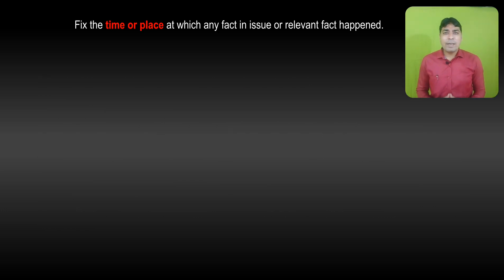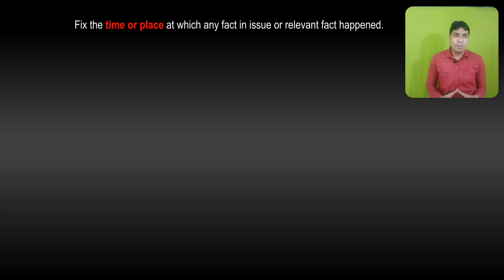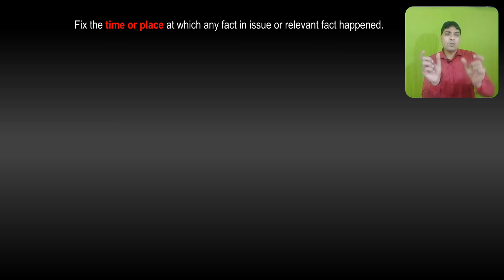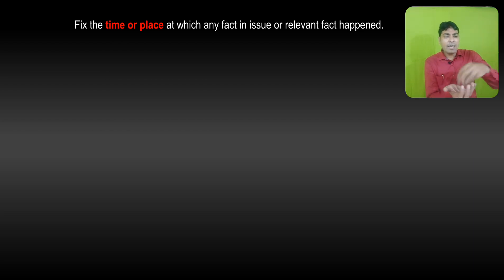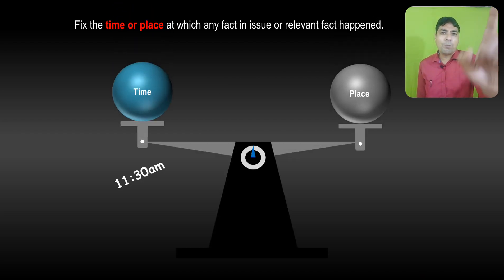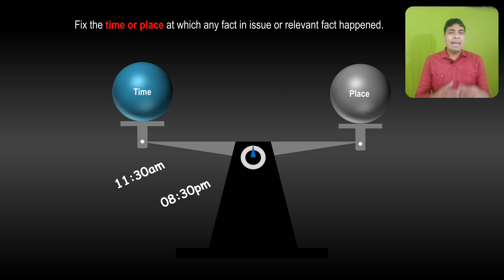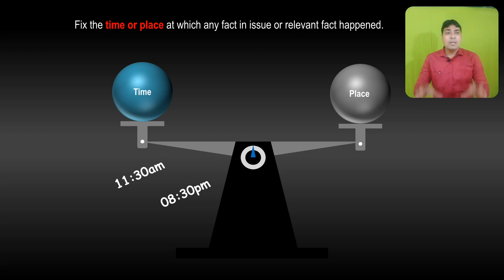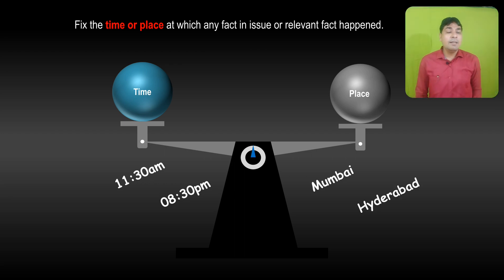Section 9 also covers facts that fix the time or place at which any fact in issue or relevant fact happened. A fact stating when or where an offense occurred — for example, at 11:30 a.m. or 8:30 a.m. — becomes relevant as it fixes the time. Similarly, stating that the offense occurred in Mumbai or Hyderabad fixes the place and becomes relevant under Section 9.